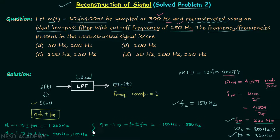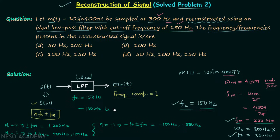We can calculate other frequencies for other values of n, but we will stop here. The cutoff frequency of the ideal low pass filter is fc = 150 Hz. This means frequency components between −150 Hz and +150 Hz will pass through to the output. Frequencies outside this range will be blocked. Let's scan the frequencies we have.